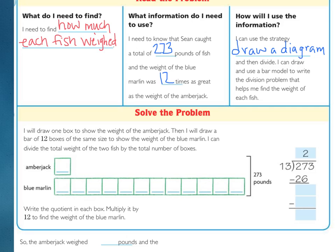Now, the bar model may be new, or maybe not, but this is how you do it. We will draw one box to show the weight of the amberjack. Then we're going to draw 12 boxes the exact same size, and they line up to make a long bar. But we need 12 boxes because the marlin was 12 times as much. So, they already have the 12, but right here, you can see that they are all the same size because we're working with equal groups, 12 times as much.